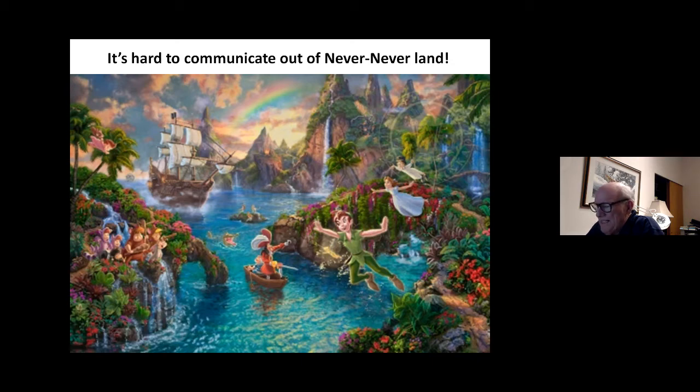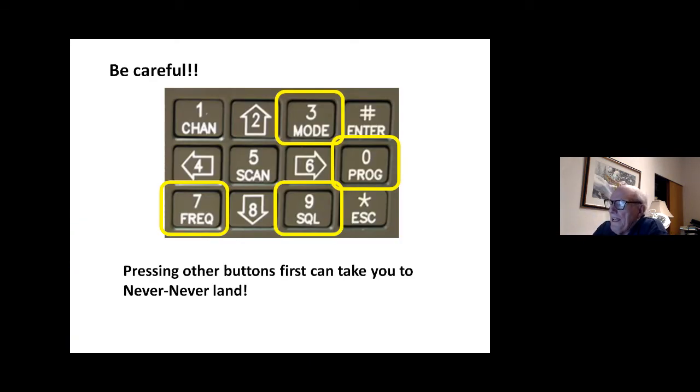The question is, if you push a wrong button, is there a get out of jail button that takes you back to where you were before entering Never Never Land? There is indeed. You can either just stop what you're doing because anything that you do will not change the radio until you hit the enter button. So if you discover yourself pushing the wrong button, just stop. And after about five seconds, it will time out and go back to the condition it was in before you started pressing any buttons. Or you could just like a computer, that lower right hand button. You can press the escape button to take you back to where you were.